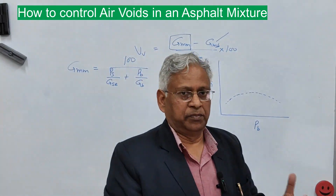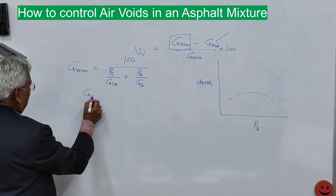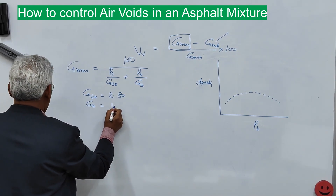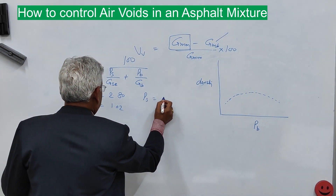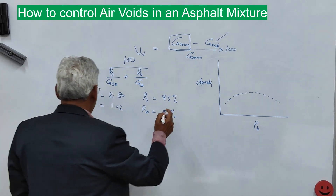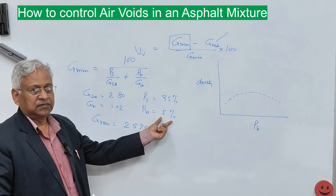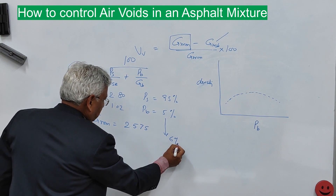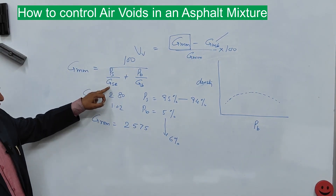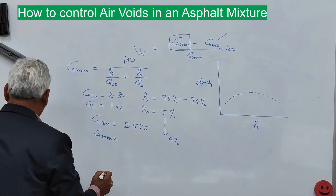Let us take an example of how Gmm changes with binder content. Assume Gse = 2.80 and Gb = 1.02. With Ps = 95% and Pb = 5%, the calculated Gmm is 2.575. Now change the binder content to 6%: Ps becomes 94% and Pb is 6%. The new Gmm is 2.534.